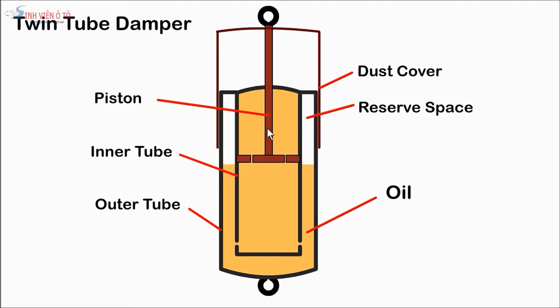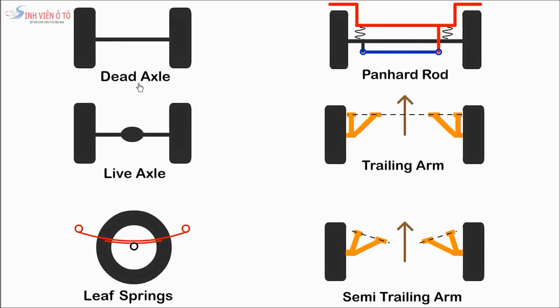A dead axle is not part of the drivetrain. The wheels are attached to it and it supports the weight of the vehicle. A live axle also drives the wheels and includes the differential. Leaf springs are made from layers of spring steel and are generally used on trucks. A Panhard rod is allowed to pivot at both ends: one end is attached to the car structure and the other to the axle. As the axle moves up and down, the Panhard rod prevents lateral movement. They are common on trucks.